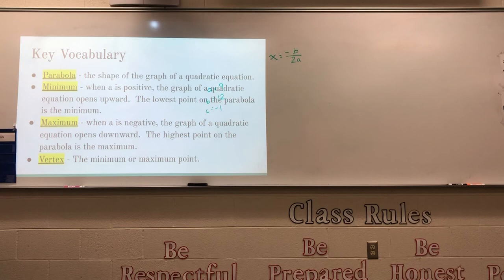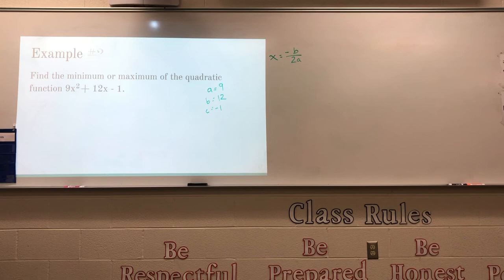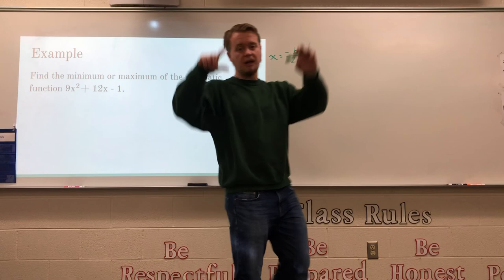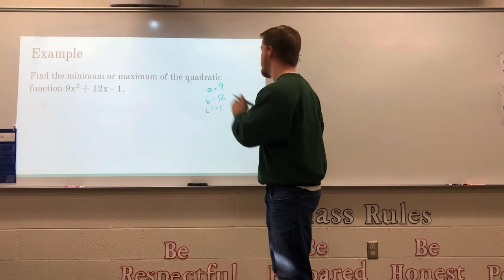Referring back to the definitions, when a is positive the quadratic equation opens upward, which means we have a minimum. Since our a value is positive, the parabola opens upward and therefore we are going to be finding the minimum value of this quadratic function.